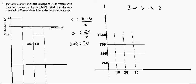Now let's draw the velocity-time graph. At time t = 0, the acceleration is 5, so 5 × 0 = 0 — velocity is 0 at t = 0. As time reaches 10 seconds, the acceleration is still 5, so 5 × 10 = 50. So our velocity reaches 50 meters per second at t = 10 seconds.